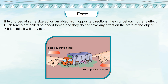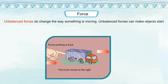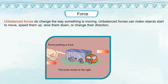If it is still, it will stay still. If it is moving, it will continue moving in the same direction and at the same speed. Unbalanced forces do change the way something is moving. Unbalanced forces can make objects start to move, speed them up, slow them down or change their direction.